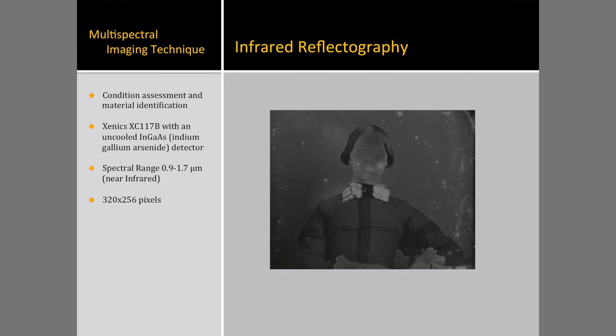Since infrared photography is part of condition assessment and material identification within conservation, we thought it worthwhile to take a look at the daguerreotype with the hand-painted pigment to see what we would find. Infrared reflectography is the recording of the variable absorption and reflectance of infrared light by an object. We used a Xenex XC117B with a spectral range of 0.9 to 1.7 microns that utilizes an uncooled InGaAs detector. Digital infrared imaging was chosen to determine if wavelengths beyond the visible might intensify the contrast of the image, and in this case, the red pigments used for the hand-painting of the cheeks and bow tie were highly reflective.